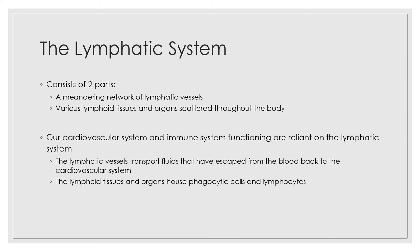But our cardiovascular system and immune system are reliant on the proper functioning of the lymphatic system. It consists of two parts: a meandering network of lymphatic vessels and various lymphoid tissues and organs scattered throughout the body. The lymphatic vessels transport fluids that have escaped from the blood back into cardiovascular circulation, and the lymphoid tissues and organs house phagocytic cells and lymphocytes important for immune system function.